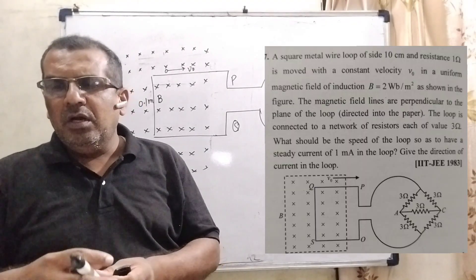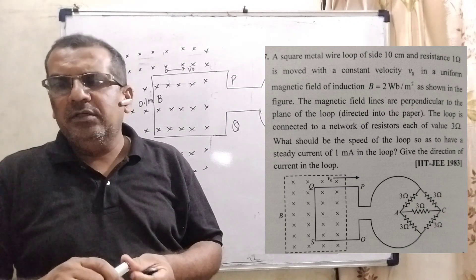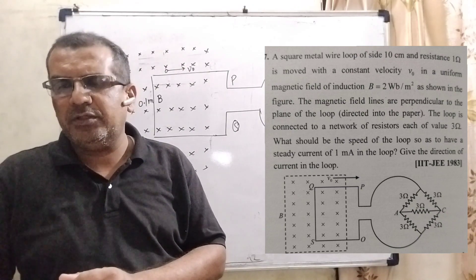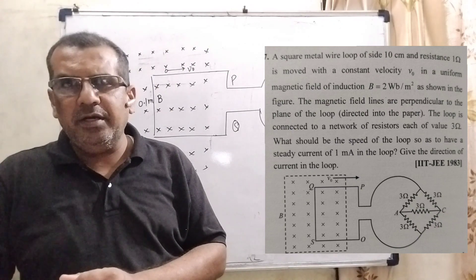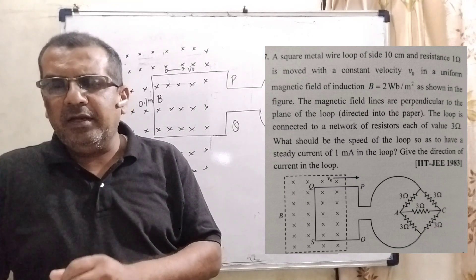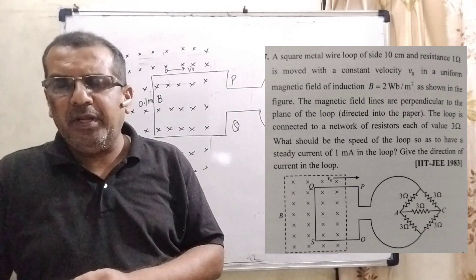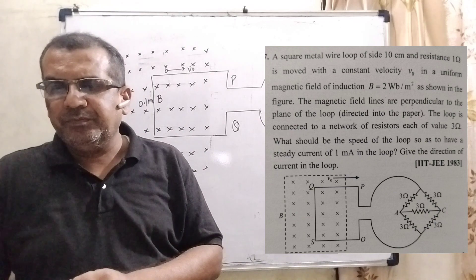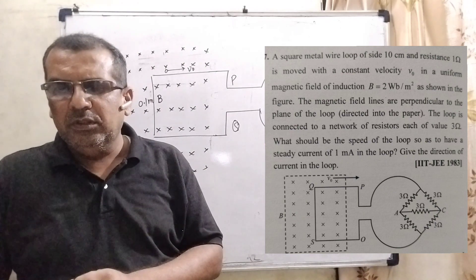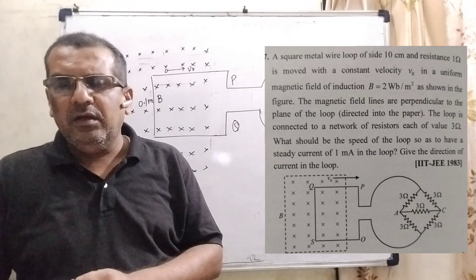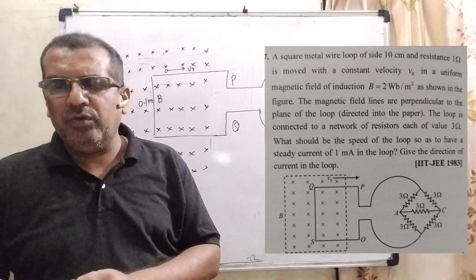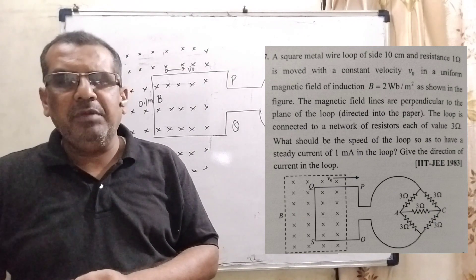Now, here is the question. A square metal wire loop of size 10 cm and resistance 1 ohm is moved with a constant velocity V₀ in a uniform magnetic field of induction B equal to 2 Weber per meter square. According to the figure, the magnetic lines are perpendicular to the plane of the loop, directed into the paper. The loop is connected to a network of resistances, each of value 3 ohm. The resistance of the loop wire OS and PQ are negligible. What should be the speed of the loop so as to have a steady current of 1 mA in the loop?